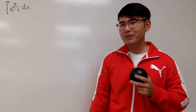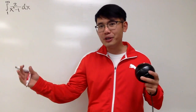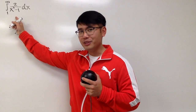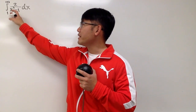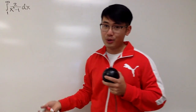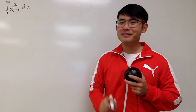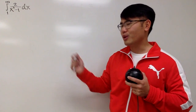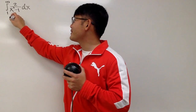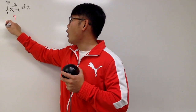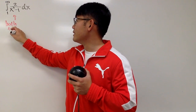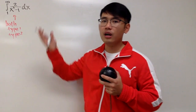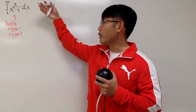We know this is improper because we see the infinity — that's the type 1 situation; we have an infinite interval. But this is also a type 2 situation, because if you put 1 in here, 1 squared is 1, minus 1 is 0 in the denominator. And 2 over 0 gives you a vertical asymptote. So this is actually both a type 1 and a type 2 situation.